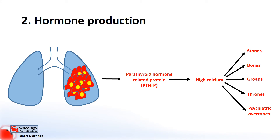PTHRP isn't the only hormone that is released by cancers. There are lots of other examples which we'll cover in later videos.